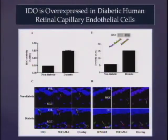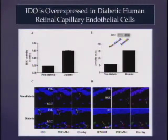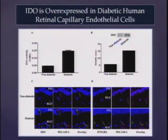One of the first things Manish did was to see whether IDO is expressed in the human retina. This is non-diabetic versus diabetic human retina showing IDO activity — as you can see, there is significantly increased activity of the enzyme in the diabetic retina. Then he did the Western blot; you can already see a huge increase in the diabetic retina at the expression level.